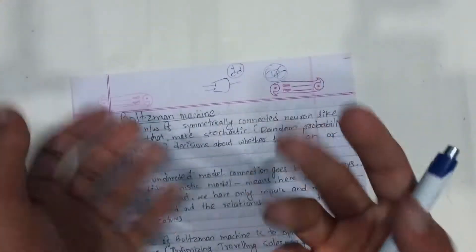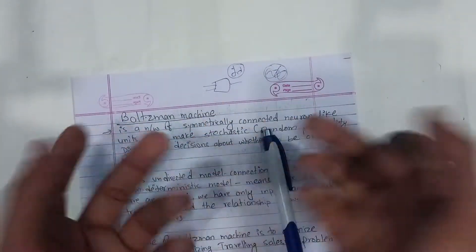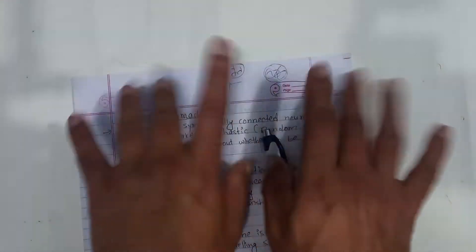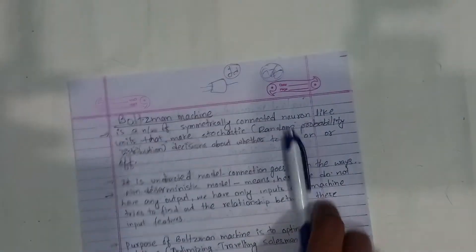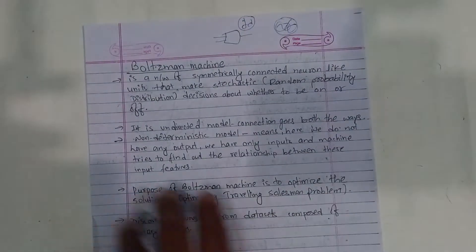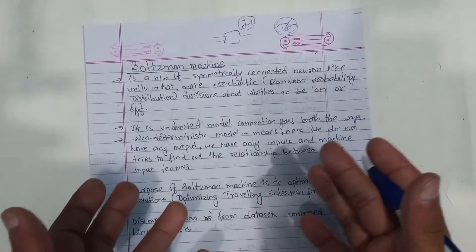We train the machine. Why do we train the machine? What is Boltzmann machine? It is an unsupervised learning machine.